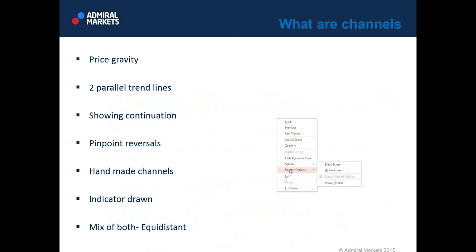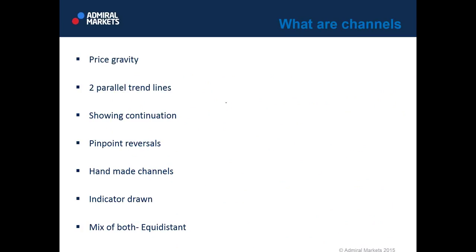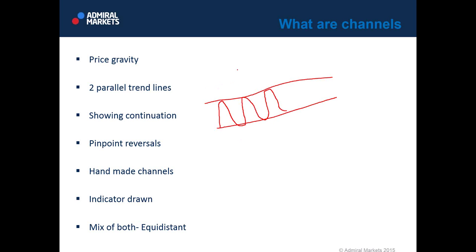Price tends to gravitate towards channel top and channel bottom. If the price is making an upward channel, the price pinnacles are touched, and you basically use two parallel trend lines to draw a channel. By drawing a channel, you know that trend is to either upside or downside, or it can also be sideways movement. You can also see clearly where the high of the channel is and where the low of the channel is. Channels are nothing more and nothing less than two parallel trend lines.